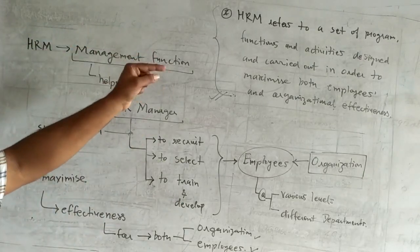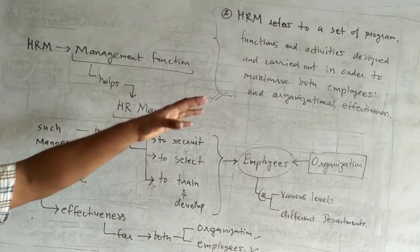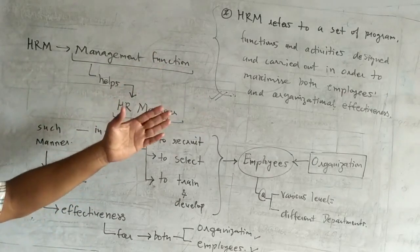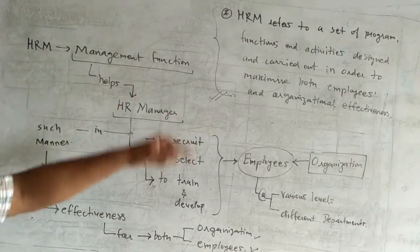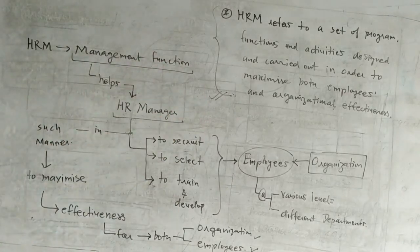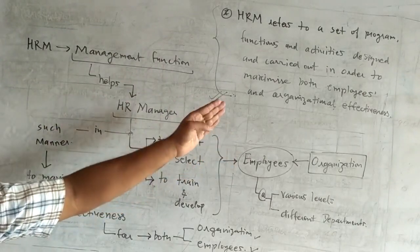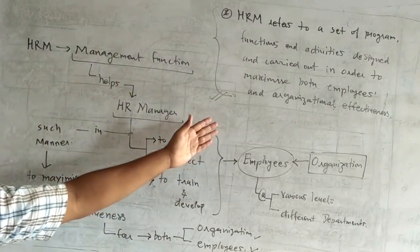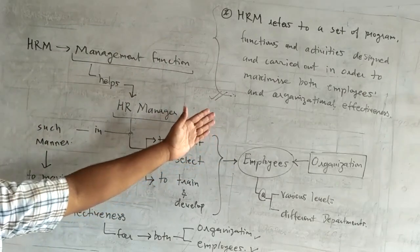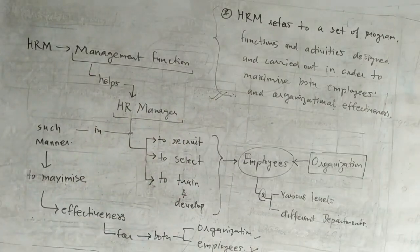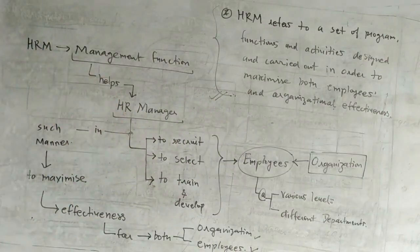Human resource management refers to a set of functions and activities designed and carried out in order to maximize both employee and organizational effectiveness. So this is the standard definition of HR — it is a bold and basic concept about management functions.